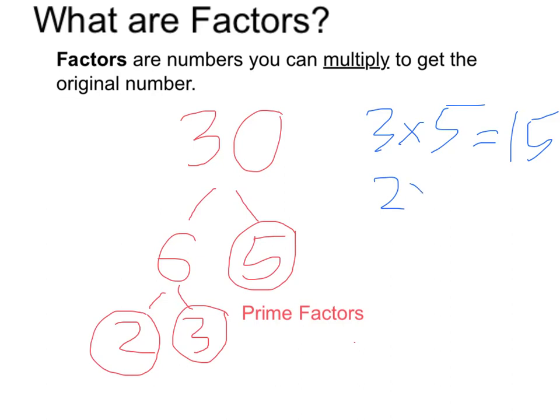Or 2 times 5, which equals 10, is also a factor because 10 times 3 equals 30.